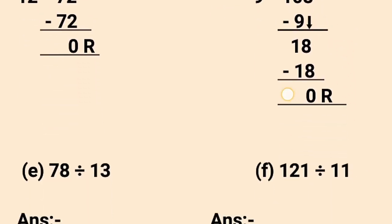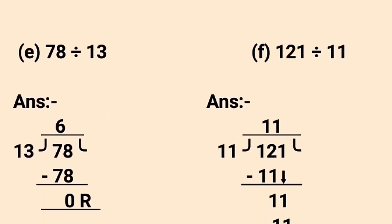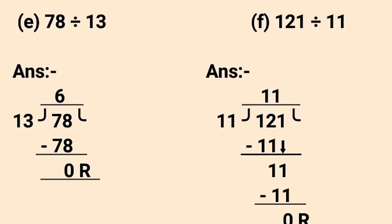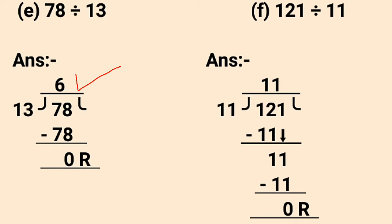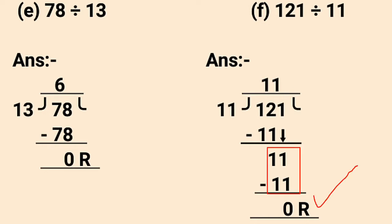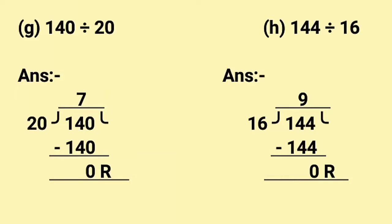E part is 78 divided by 13. Here we know 13 sixes are 78. Now 78 minus 78 gives us 0 remainder, so the answer is 6. F part is 121 divided by 11. Now 11 ones are 11. 12 minus 11 gives us 1. Next one comes down, so it becomes 11. Now 11 minus 11 gives us 0 remainder. So this is the answer.